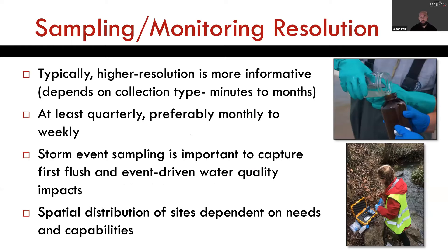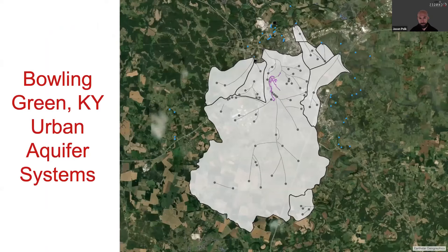On sampling and monitoring resolution: for some parameters we collect higher resolution, for others lower. The city's ambient program does at least quarterly hand sampling. A lot of our sonde collection data is done at one- or ten-minute resolution. We also do storm event sampling to capture first flush events — getting a good indication of pulses of contaminants that come through, since karst systems are so flashy. We try to distribute our sites spatially in a way that gives us a good handle on what's happening across different basins and the broader urban landscape.